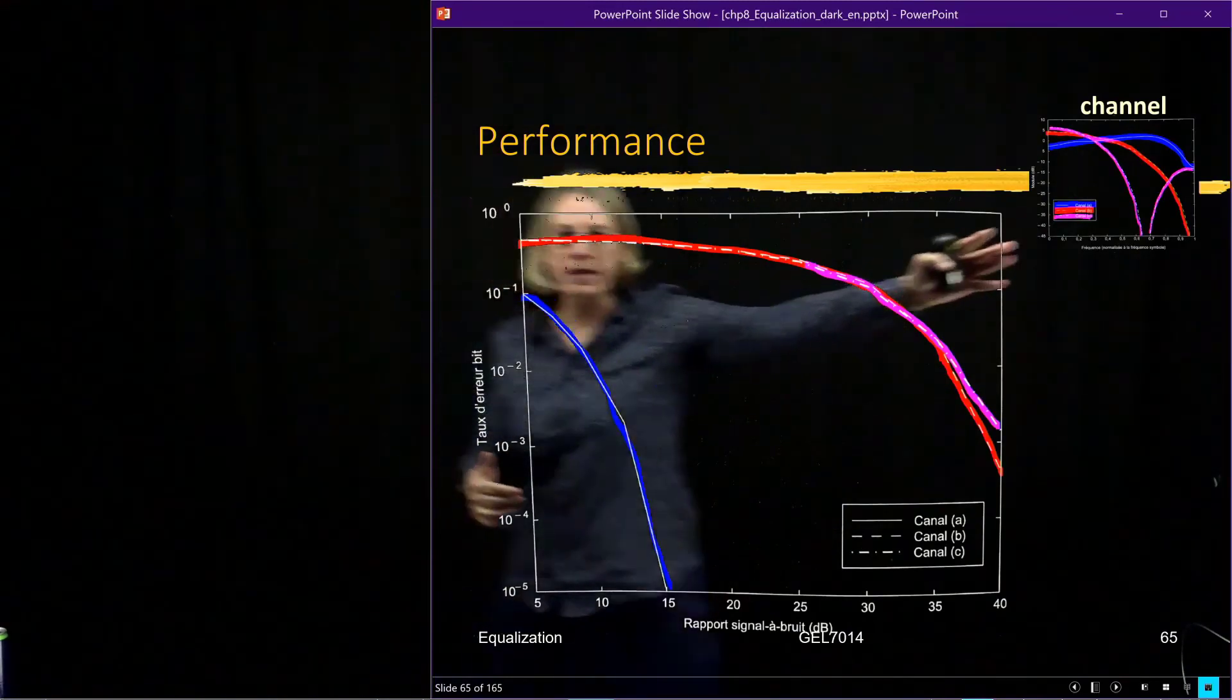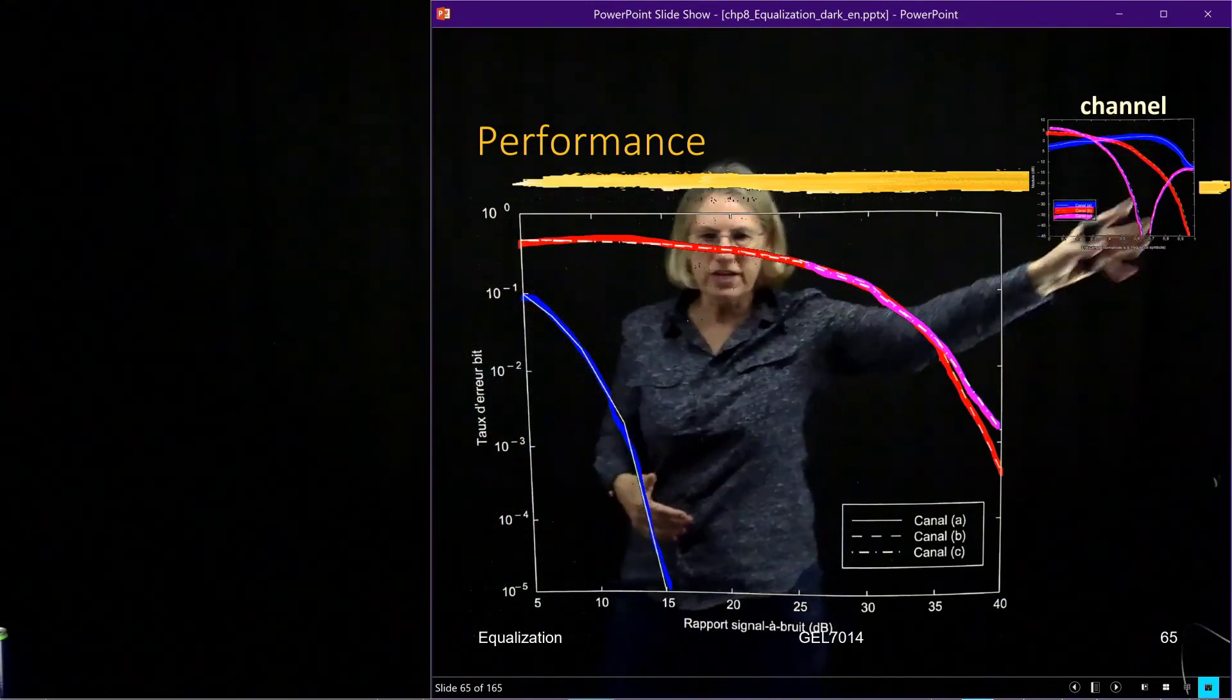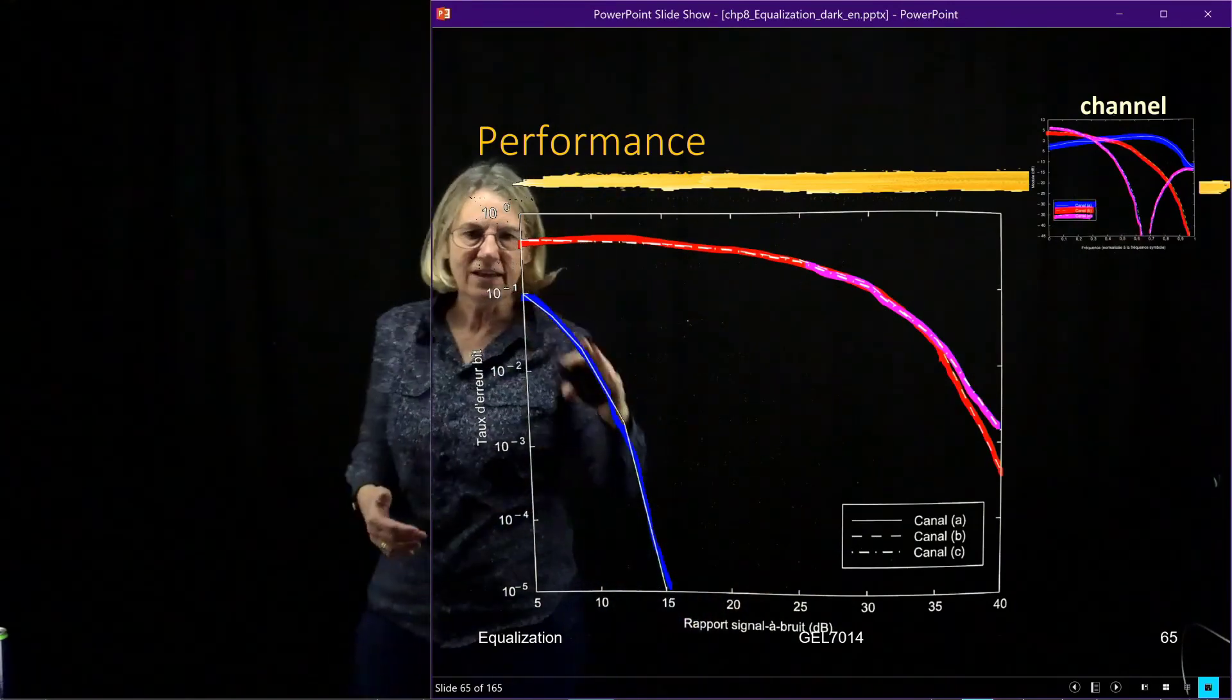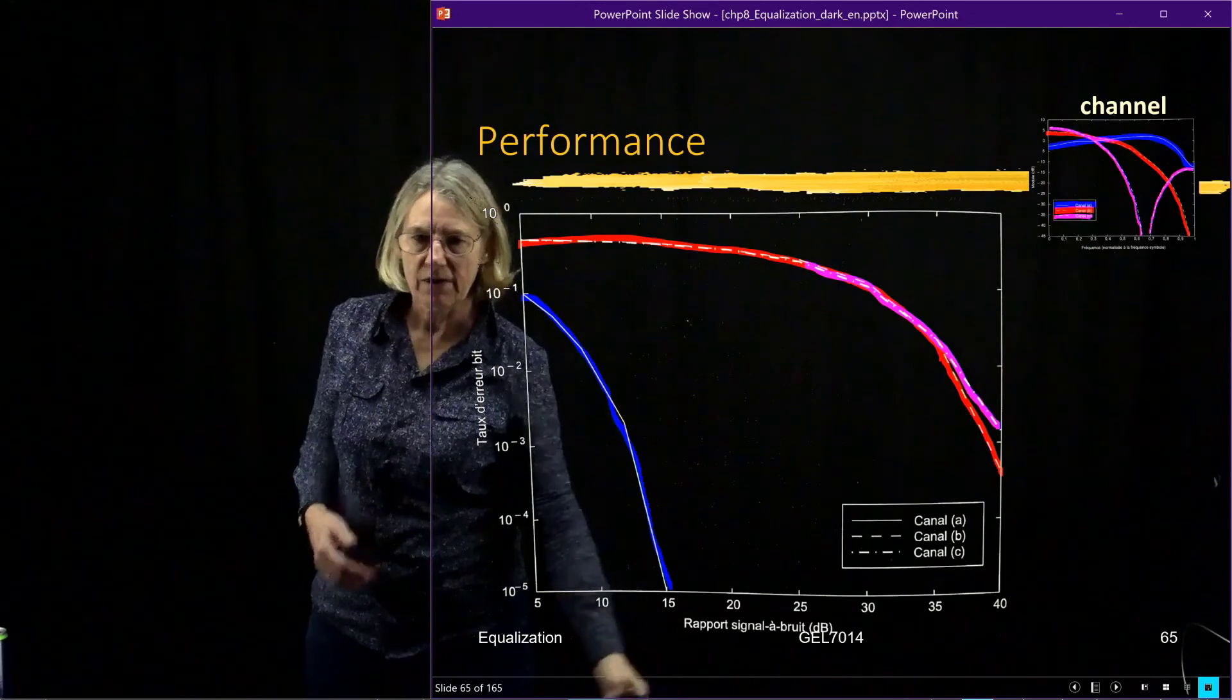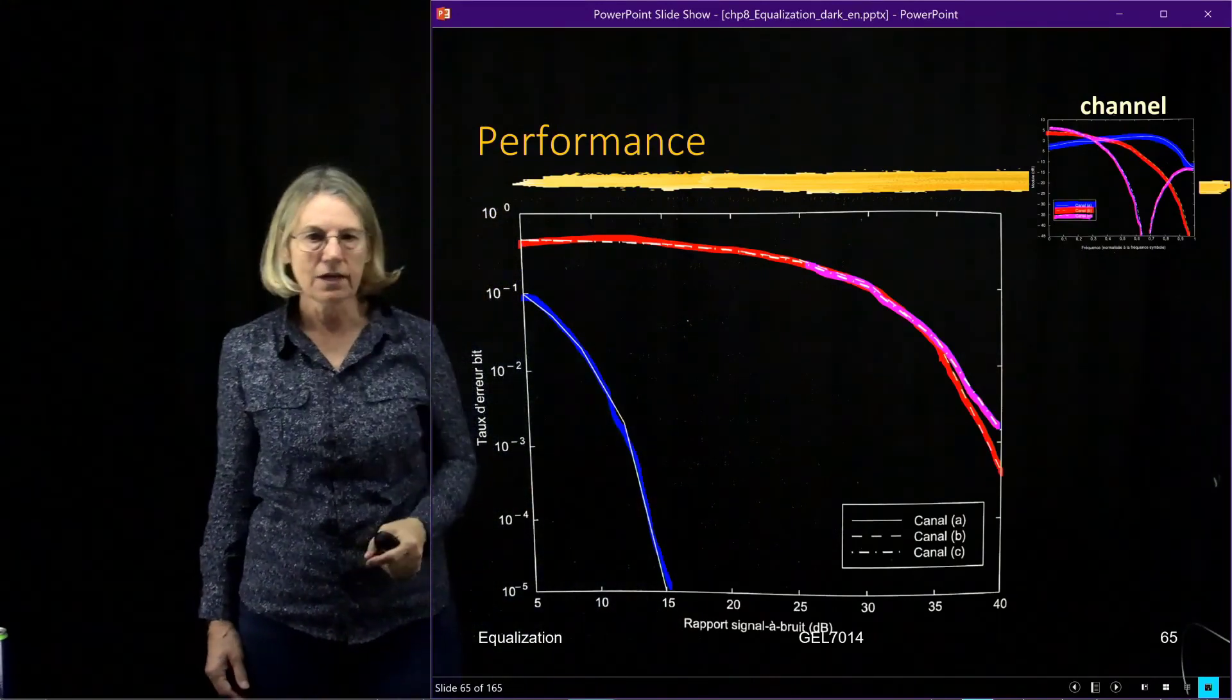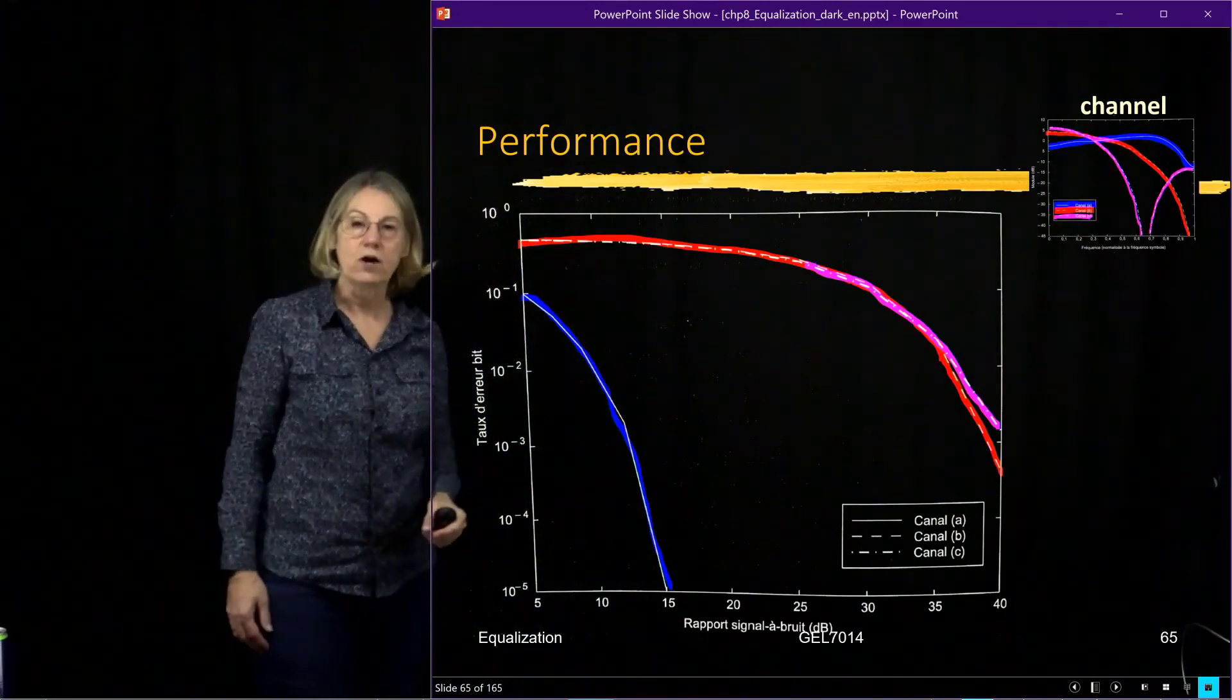You can see that on the blue channel I get a pretty good bit error rate. It looks like it's pretty close to eliminating all of the ISI. Here there might be a little penalty but it's probably not very big.